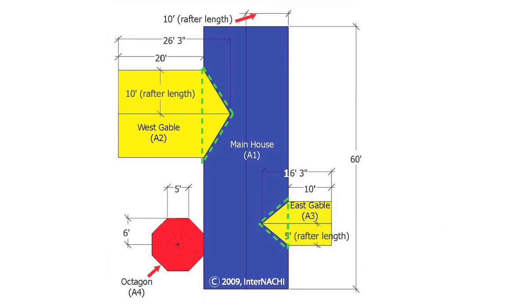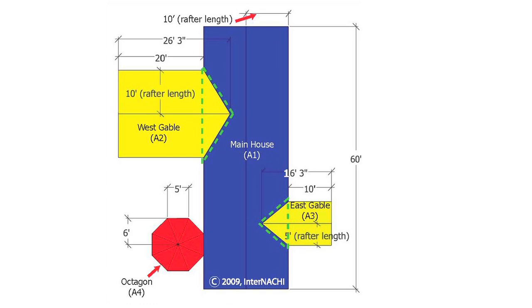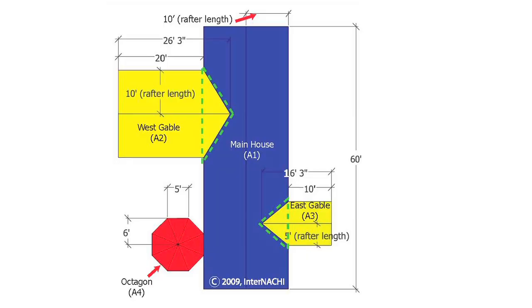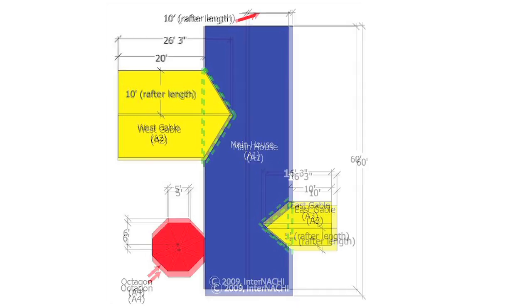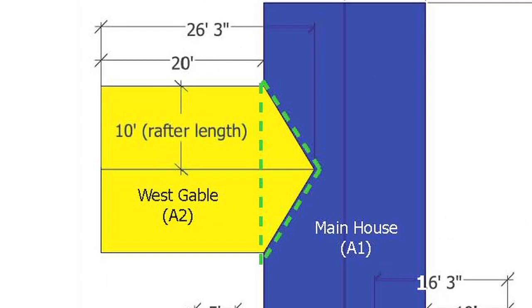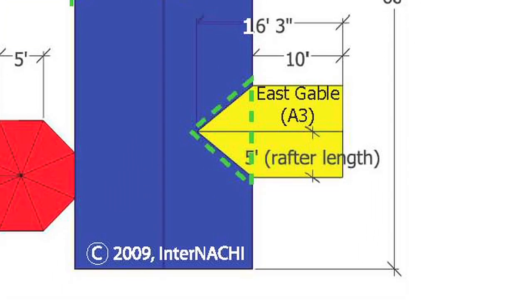Next is the big blue section, a gable roof with two large rectangular planes. The area of a rectangle is base times height. For this house roof, we have base times height as ten times sixty, or six hundred square feet. Because there are two rectangular planes, the total square footage of the blue main house roof, A1, is double that — twelve hundred square feet. Due to overlap in areas, we must subtract a portion of each yellow gable from the main house roof total. The green dashed lines indicate the areas that must be subtracted from the main house roof, A1.